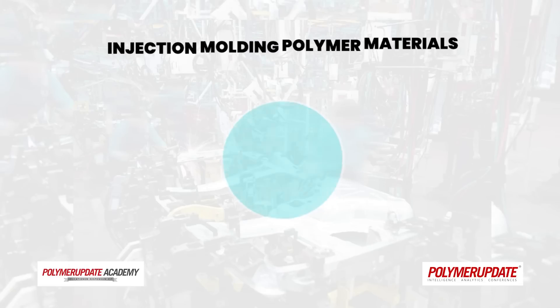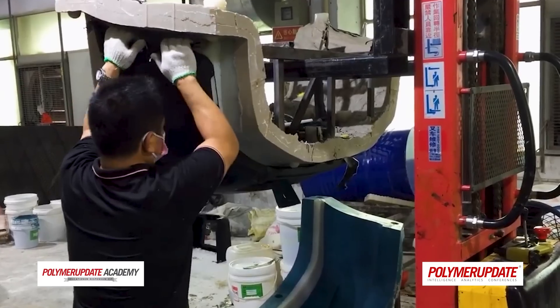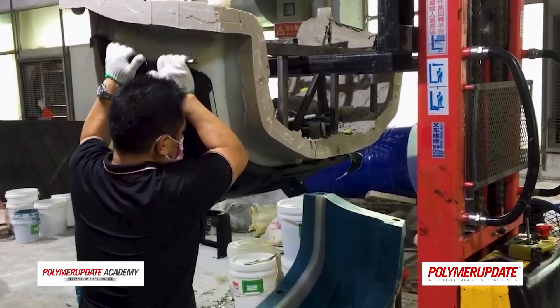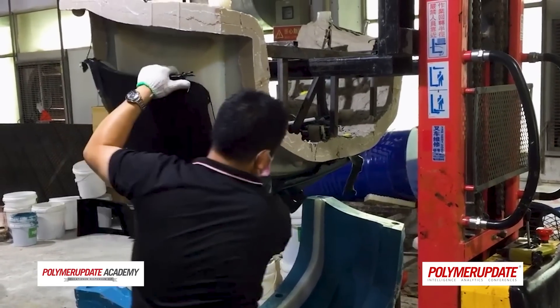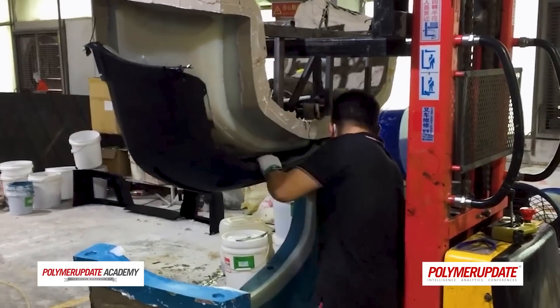In the third session, we'll cover advanced injection molding techniques for polymer materials, including gas-assisted injection molding, foam injection molding, over-molding, and more. We'll explain the limitations of each technique and their applications in the automotive industry.